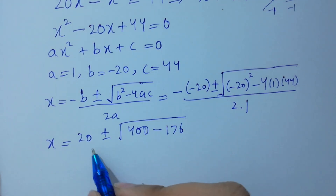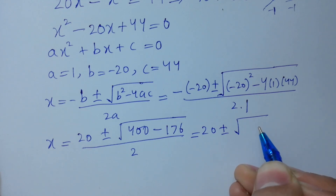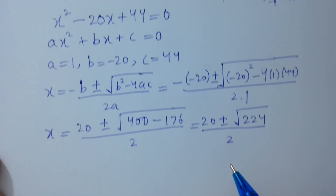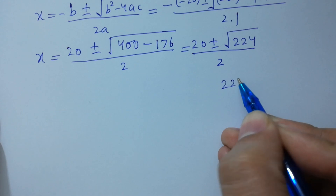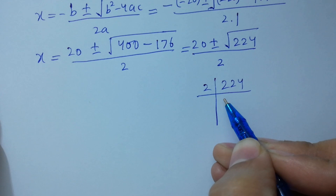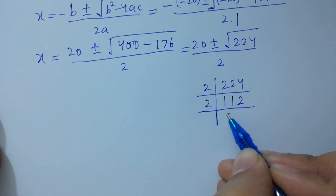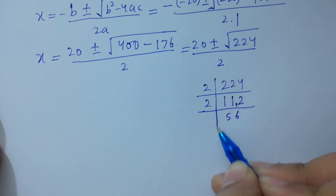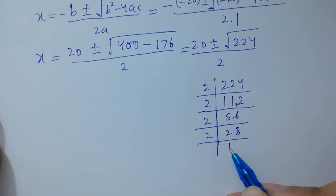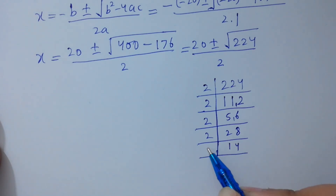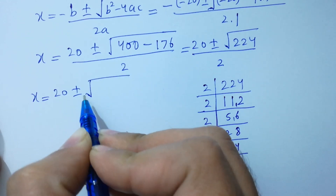We have 400 minus 176, which gives 224, over 2. To simplify, let's find the factors of 224. 224 is divisible by 2: 2 times 112, then 2 times 56, 2 times 28, 2 times 14, and 2 times 7. So we have x equal to 20 plus or minus the square root of 224, over 2.